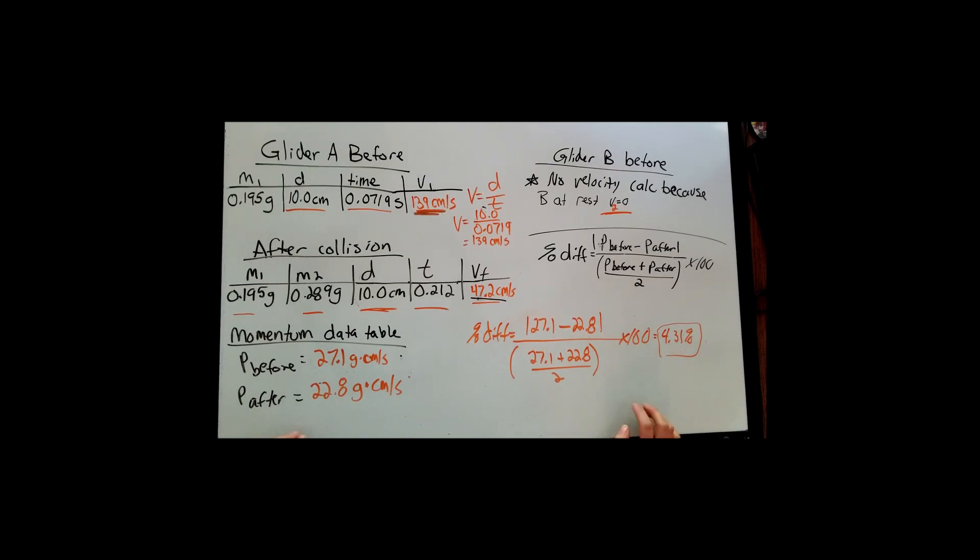So you're going to need to go through all of these steps for trial two, making sure that you're calculating the velocities and filling in the table, showing your work, calculating the momentum, showing your work, and then putting that in the data table as well, and then last but not least, this percent difference. So I hope that helps clarify what you need to be doing for the lab, and let me know if you have any other questions.